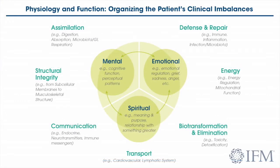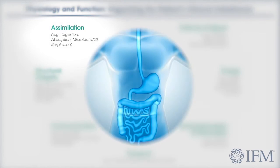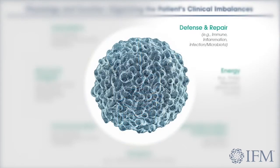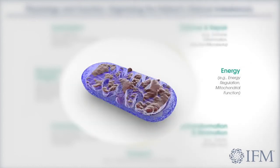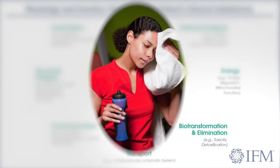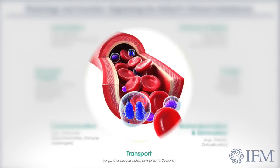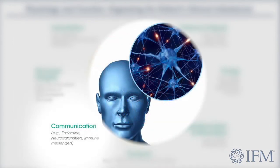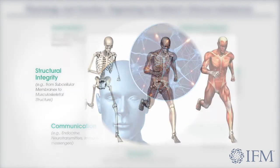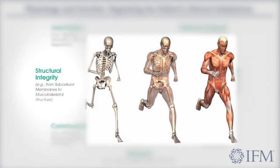The functional medicine matrix takes a systems biology approach by defining seven primary physiological systems to organize and understand the patient's clinical history and chief complaints. These systems incorporate all of the major functions of the body: assimilating nutrients from the outside world through the digestive tract, immune function and repair of the body, energy metabolism, removal of waste and toxins, transport of blood and nutrients within the body, hormone and neurotransmitter communication, and structural integrity including musculoskeletal health and all levels of structure down to the level of the cell.